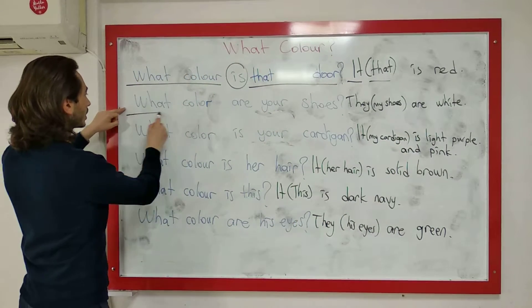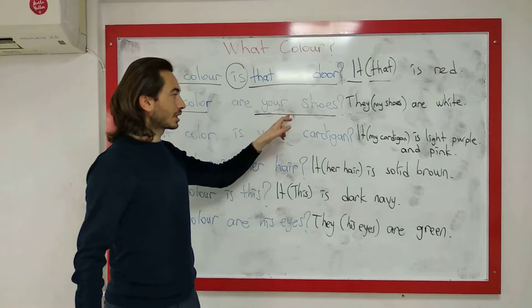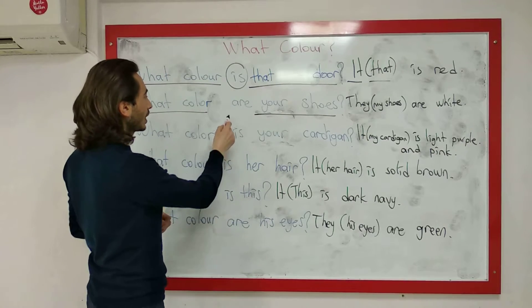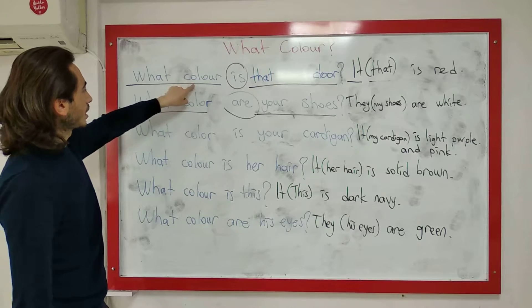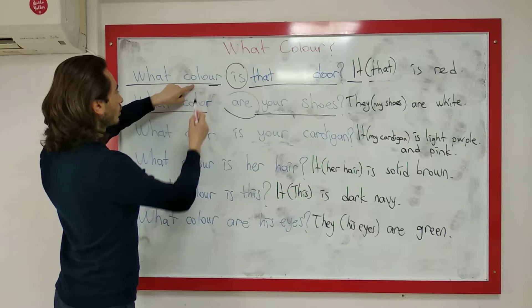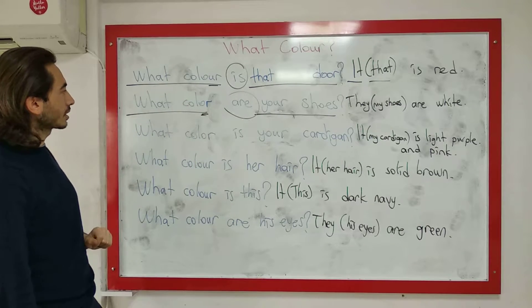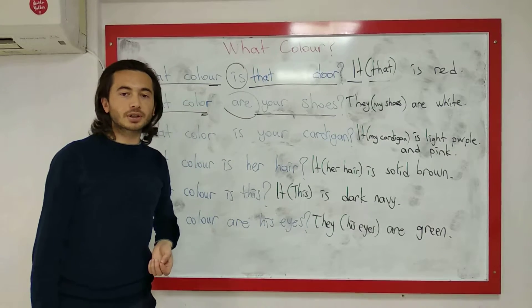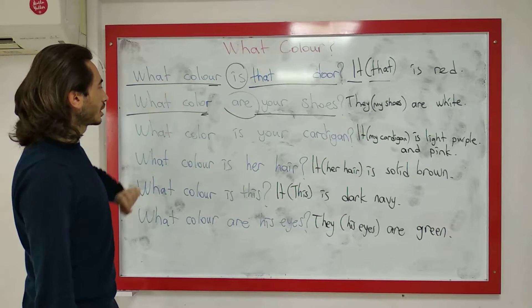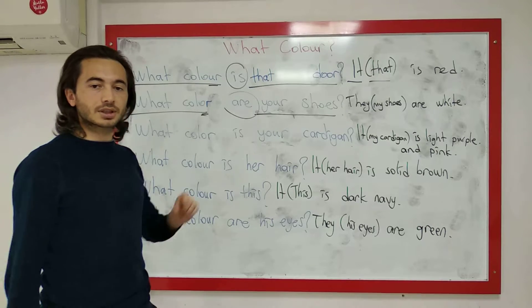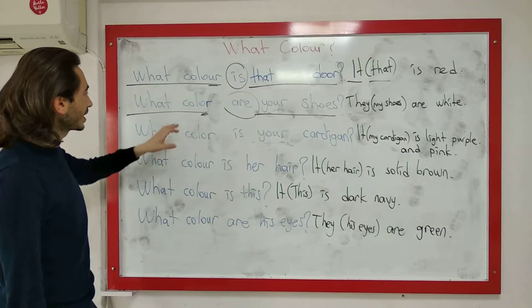Sıradaki sorumuz: What color are your shoes? Your shoes — senin ayakkabıların demek. Ayakkabı çoğul olduğundan dolayı bu sefer 'are' kullandım. Burada dikkat: 'colour' yazarken bir 'u' var — bu İngiliz İngilizcesi. Amerikan İngilizcesinde ise 'color' şeklinde 'u' olmadan yazılır. Anlam ve okunuş aynıdır, yazılışlarında ufak bir fark var. İstediğinizi kullanabilirsiniz.